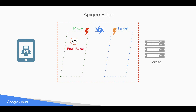Similarly, whenever a fault occurs in the target endpoint — let's say you are converting the payload from one format to another format specific to a target in the target endpoint, and for some reason that particular policy fails due to unresolved variables — then the error is raised in the target endpoint. In that case, you have to handle that fault in the target endpoint, so you're going to write the fault rules there.